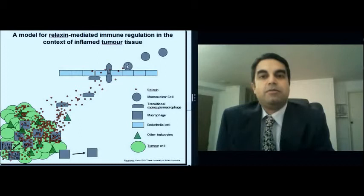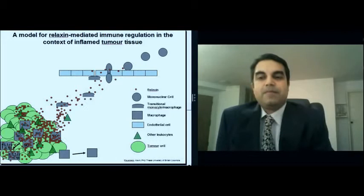And so these mononuclear cells detect relaxin in the bloodstream and they're recruited to cross the endothelial wall, where eventually they become transitional monocyte macrophages. And when they finally reach the tumor site, they become fully-activated macrophages.